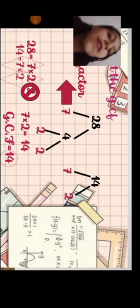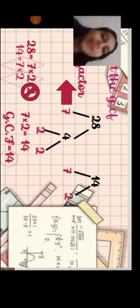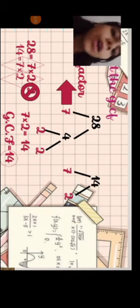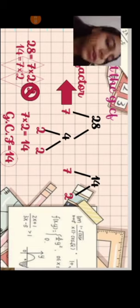Now, 14. What two factors multiply to get 14? 7 and 2. 7 and 2 are both prime factors, so you will circle them.